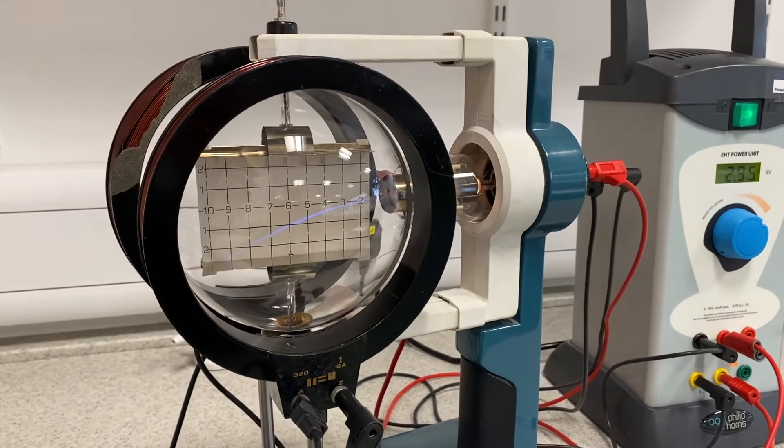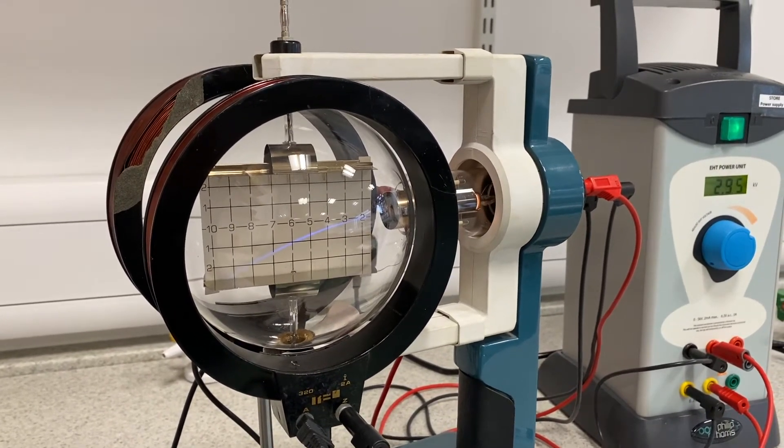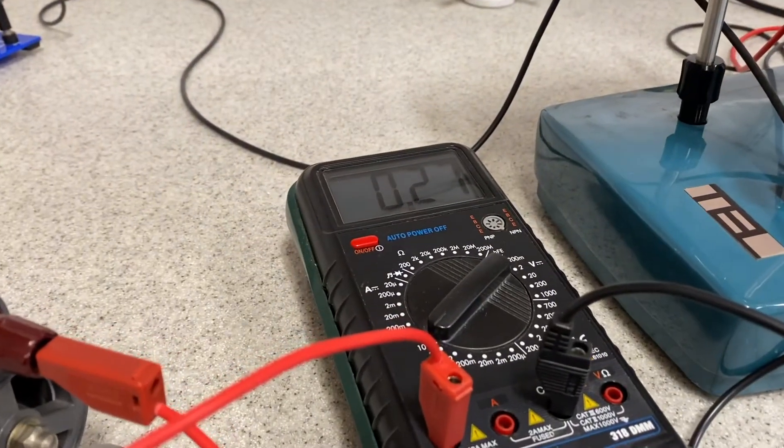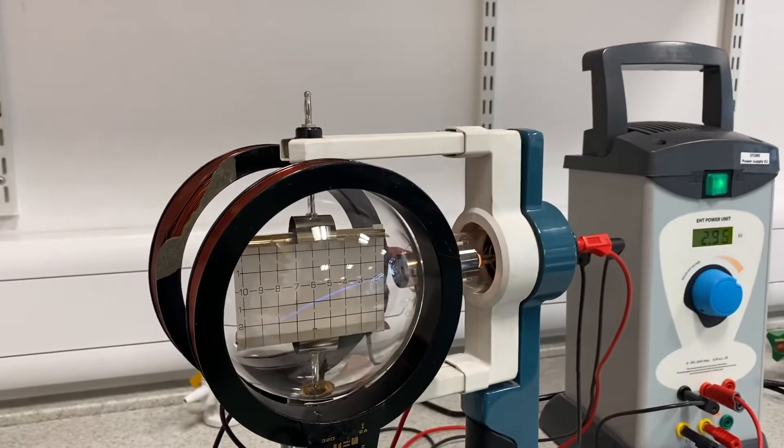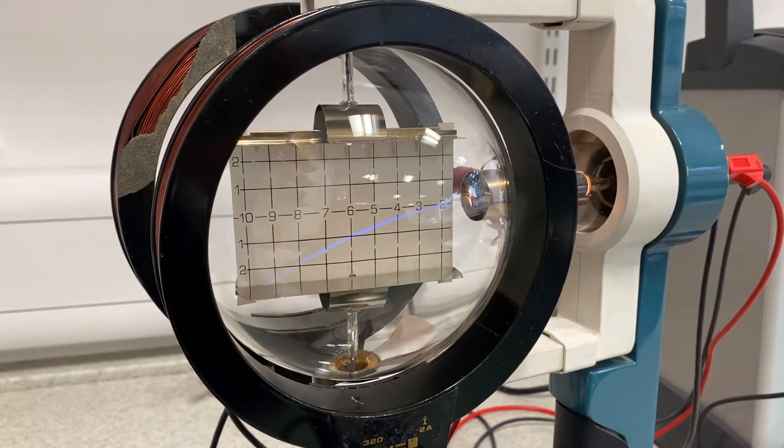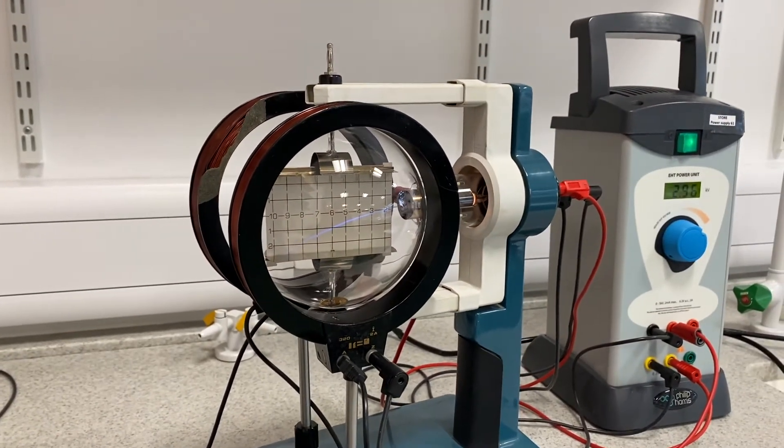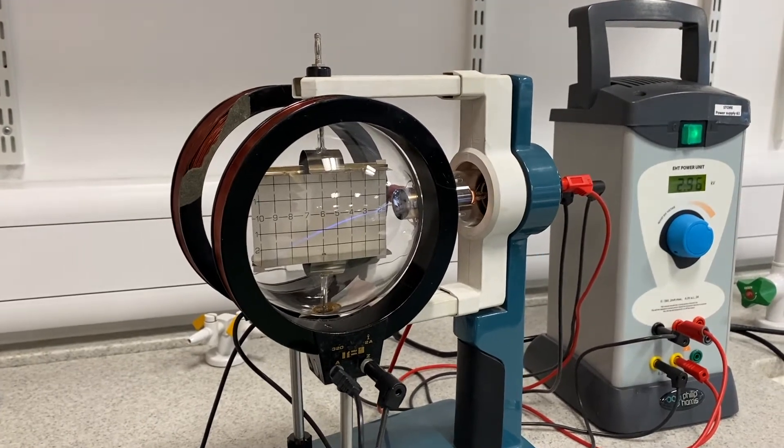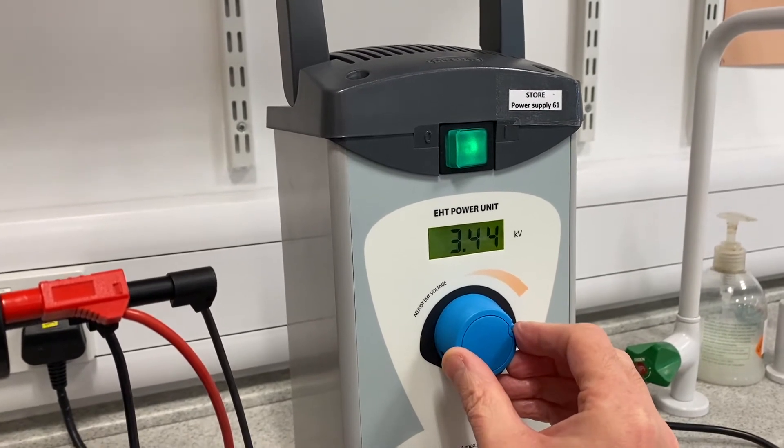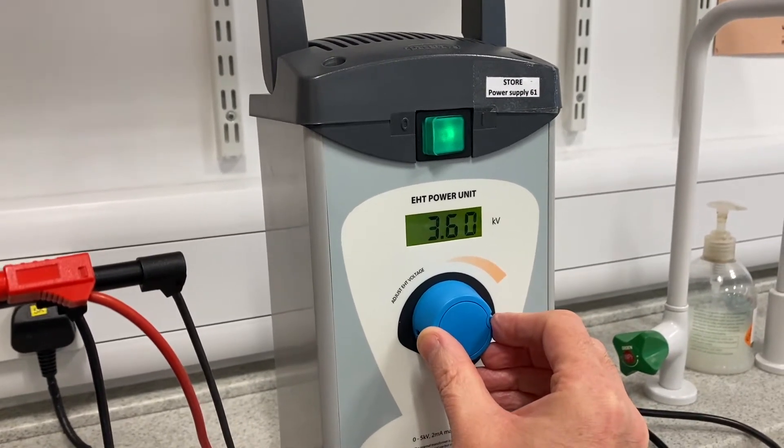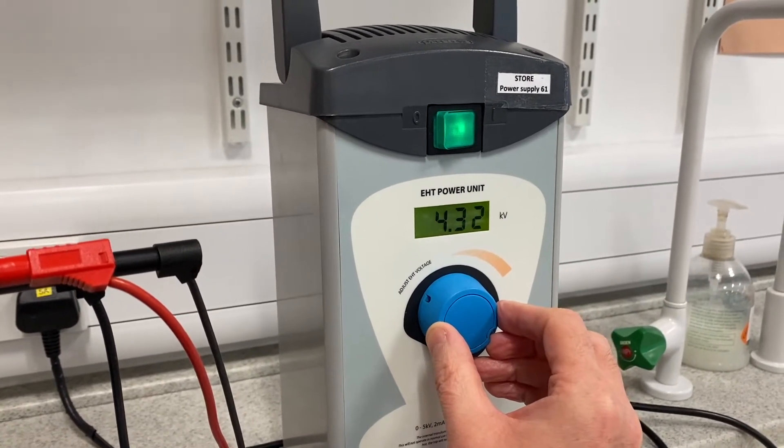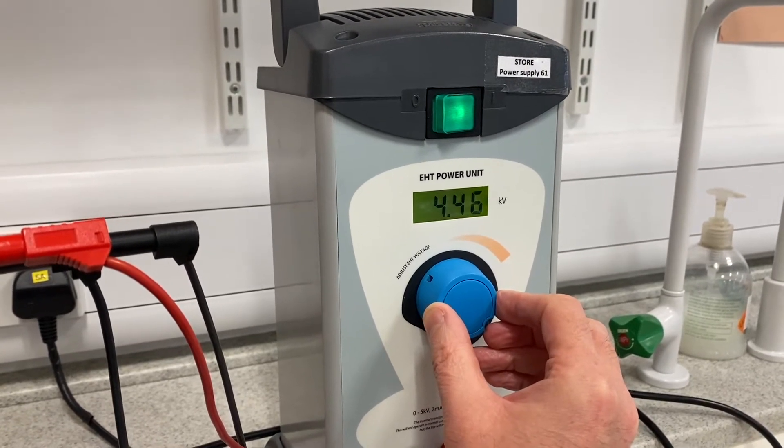We're going to use this apparatus to try and measure the charge to mass ratio of an electron, and we do that by using the current that's flowing through the Helmholtz coils and the radius of curvature of that beam of electrons. Now in order to do the experiment, there are only a couple of things we need to measure. We need to measure, firstly, the anode voltage. That's the voltage that the electrons are being accelerated through the anode of the electron gun, so I'm setting that to 4,500 volts.